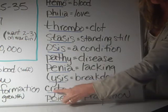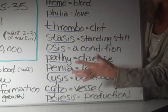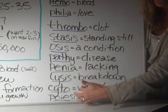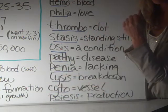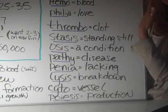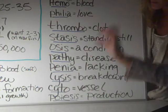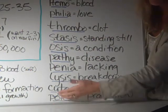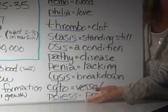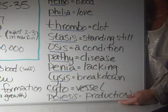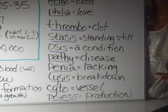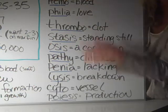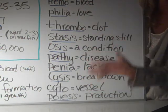Cyto — C-Y-T-O — means vessel. So thrombocytopenia: not enough platelets in the bloodstream. Poiesis — P-O-I-E-S-I-S — just means the production of something. So you might see the word hematopoiesis, meaning production of blood cells.